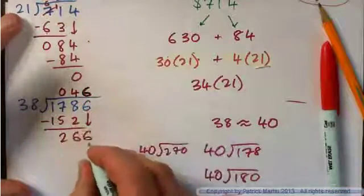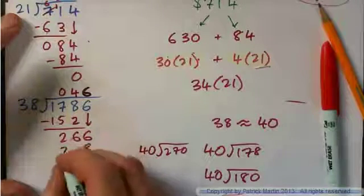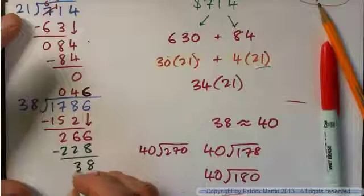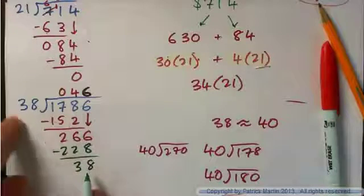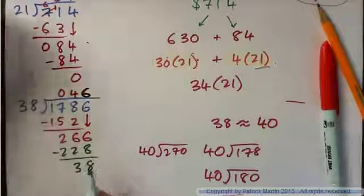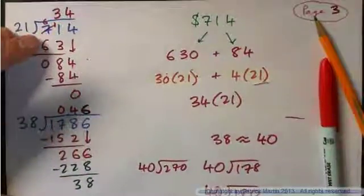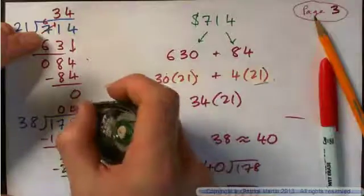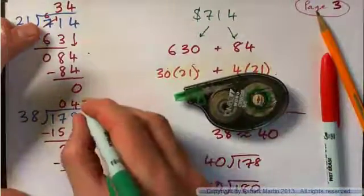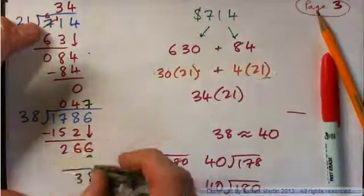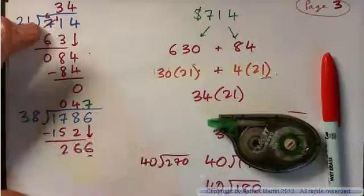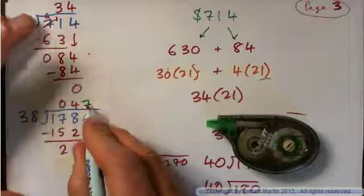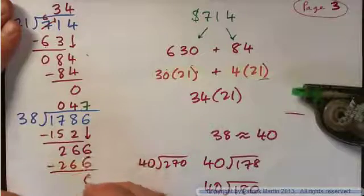6 times 8 is 48, carry the 4. 6 times 3 is 18, and 4 is 22. Subtract: 16 minus 8 is 8, 5 minus 2 is 3 — so my remainder is 38, which is a multiple of 38. That means 6 was a bad guess. All you have to do is try again. Obviously 6 wasn't enough, so try 7 times. 7 times 8 is 56, carry the 5. 7 times 3 is 21, and 5 is 26. Subtract — remainder 0. That worked!